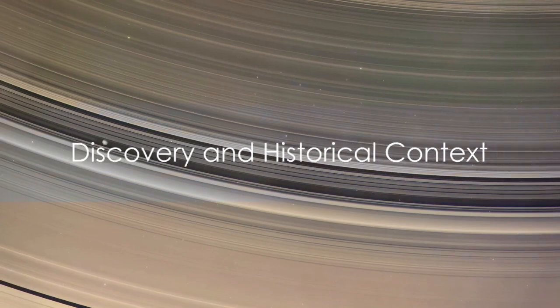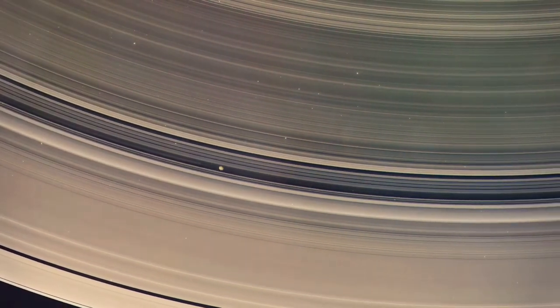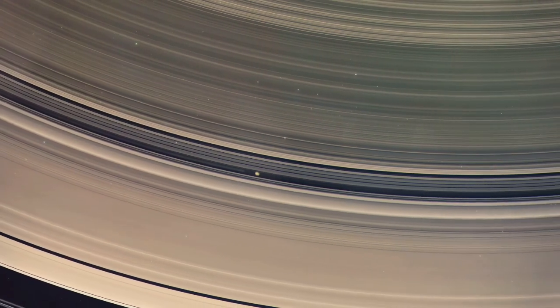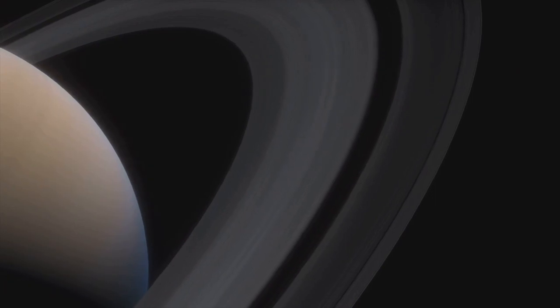The story of planetary ring discovery is a testament to human curiosity and the advances in astronomical technology. The journey begins in the early 17th century, when Galileo Galilei first peered at Saturn through his rudimentary telescope. He observed what he described as ears or handles on the planet, not realizing he was looking at a ring system.